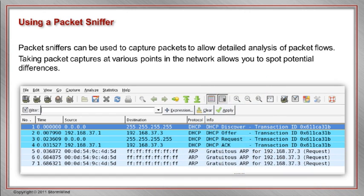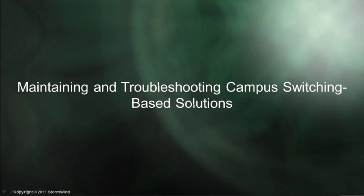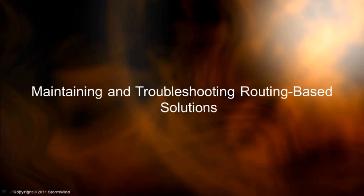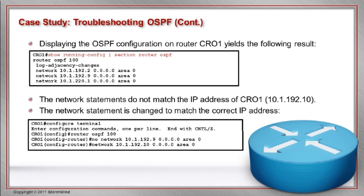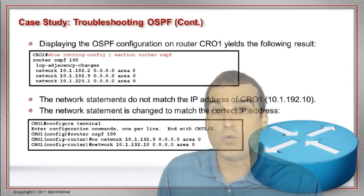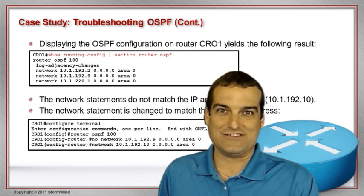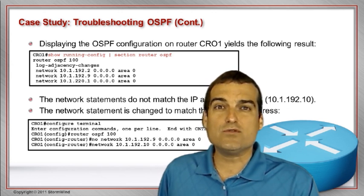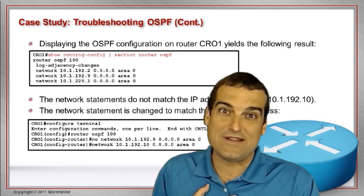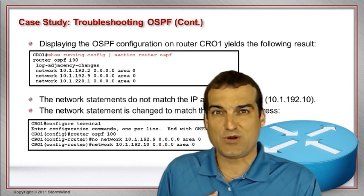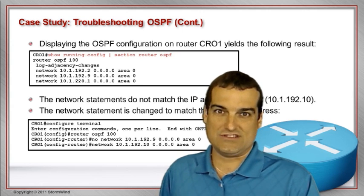Next in this course, we'll get very specific to particular technologies — for instance, Layer 2 troubleshooting and Layer 3 troubleshooting. We'll look at specific case studies involving technologies like OSPF, EIGRP, VLANs, and Spanning Tree Protocol, and we'll really challenge you in these case studies with real-world-type troubleshooting scenarios. You'll be challenged to come up with your own solution, and then you'll see a demonstration of the best practice approach line-by-line at actual Cisco routers and switches.